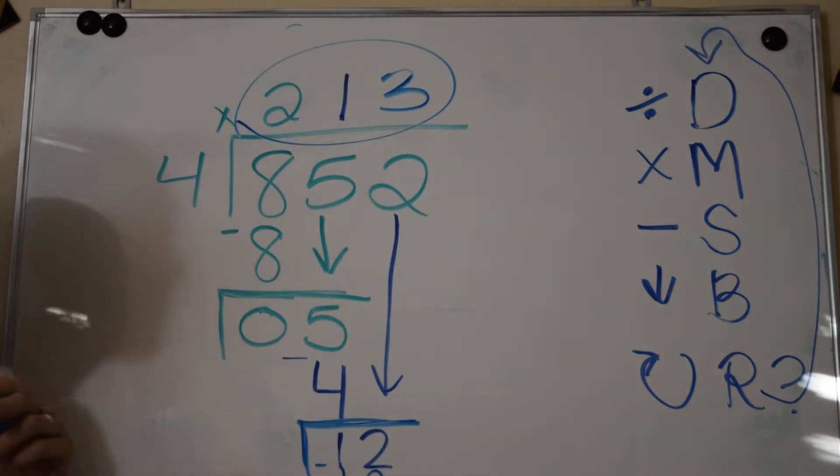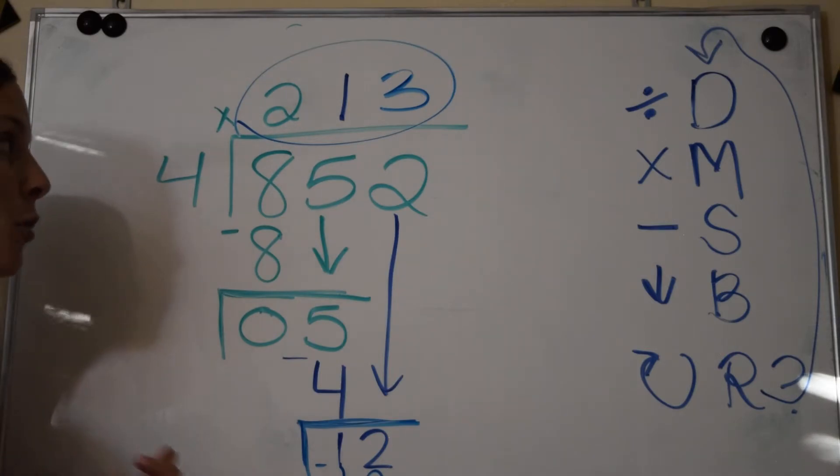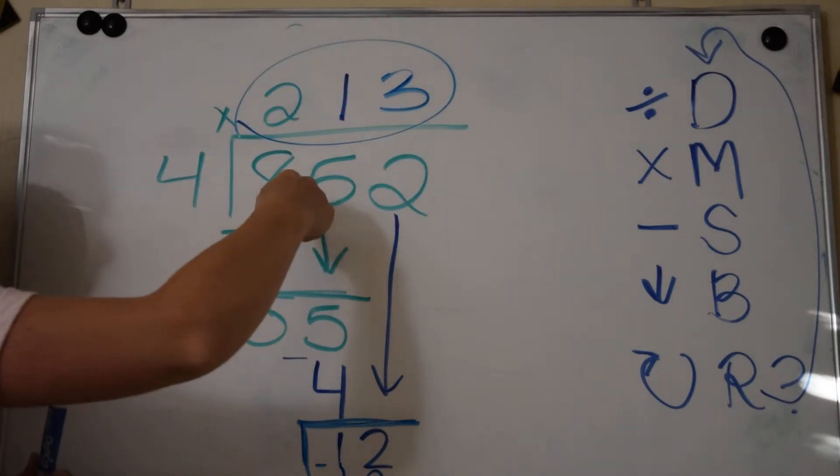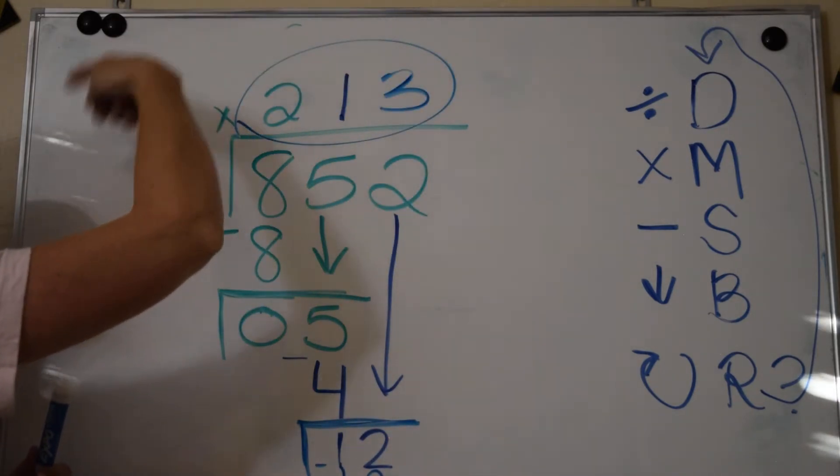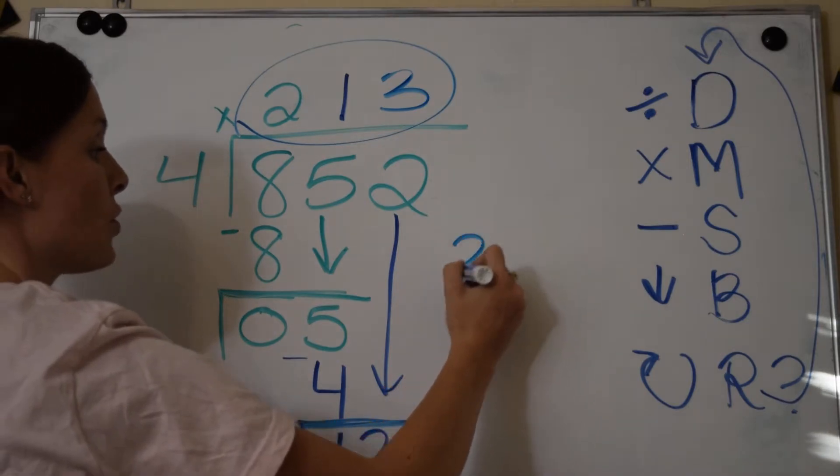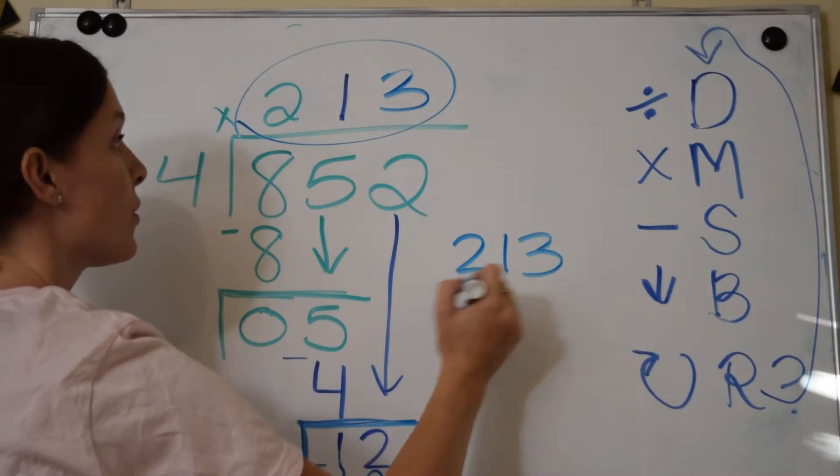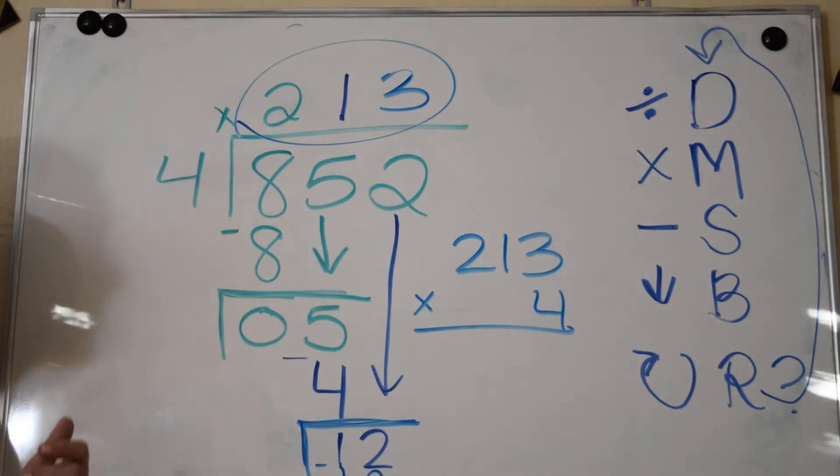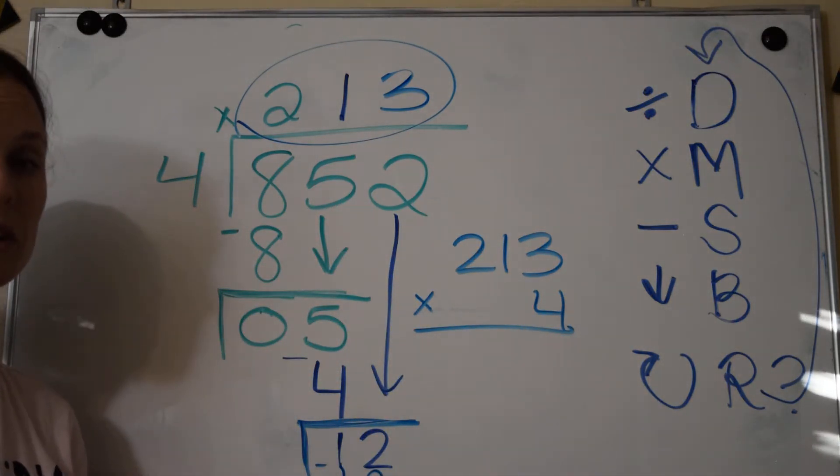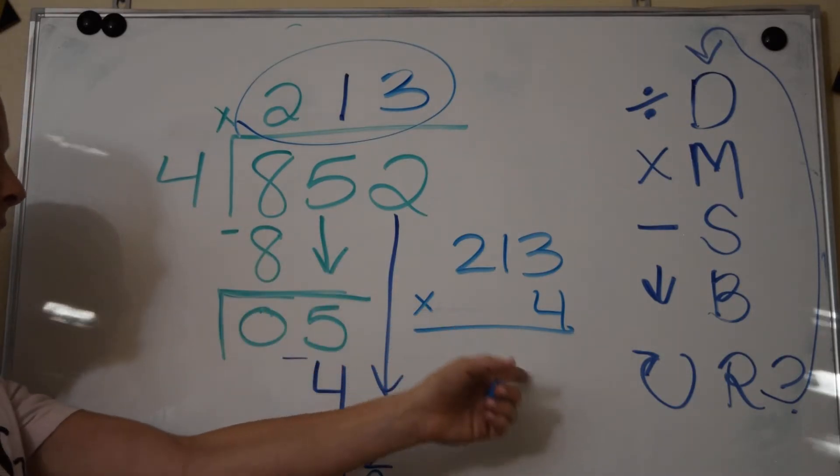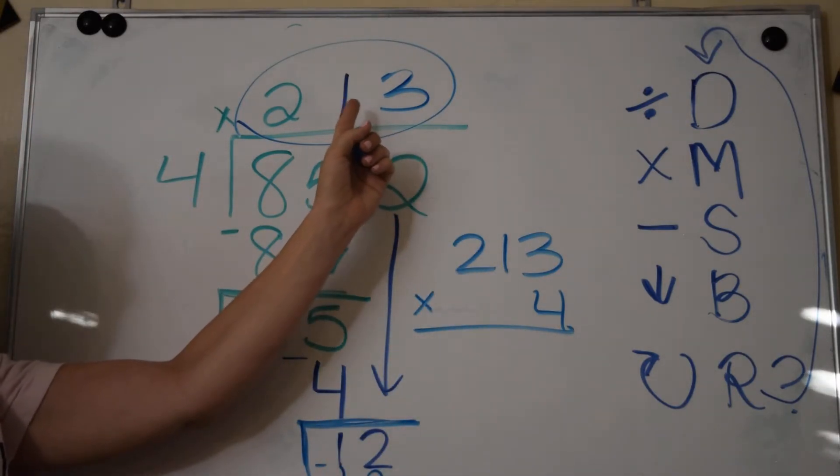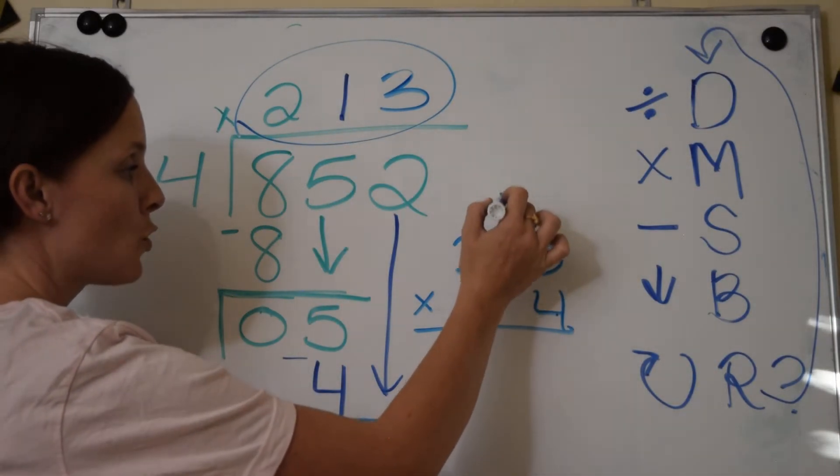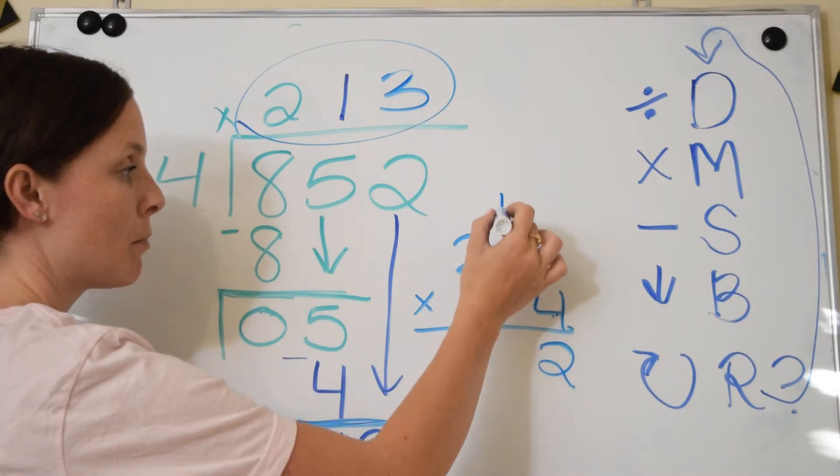Our complete answer is 213. Now how do we know if we did that right? This is a very important part. Remember, this is considered a fact family. If I just divided, I can go back and multiply and it should work, which means that 213 times 4 should give me 852. This is really important to do when you're doing long division. 4 times 3 is 12, 4 times 1 is 4 plus 1 is 5, 4 times 2 is 8. Yes, we did it right.